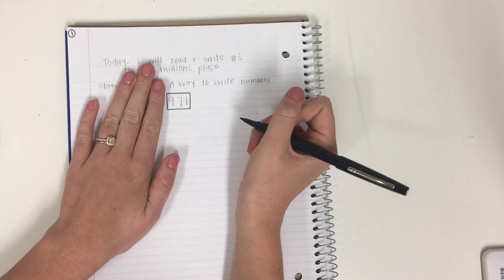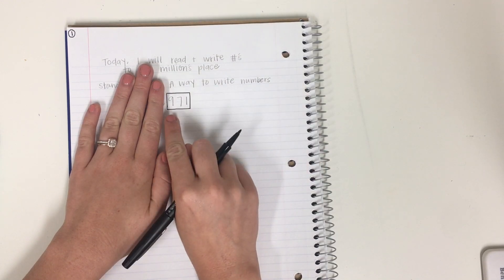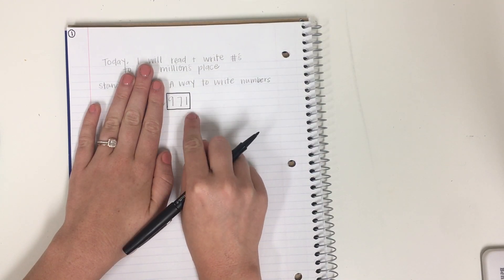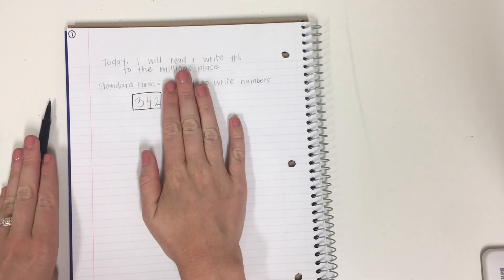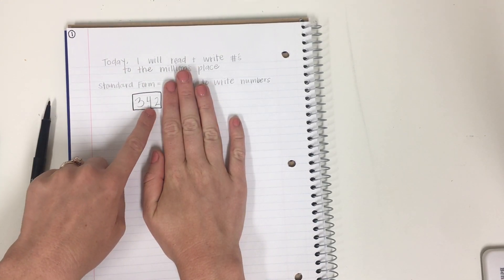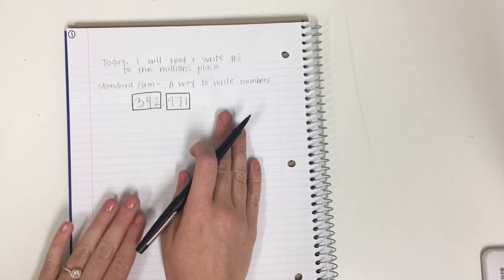So when we look at this number, we know how to say this, right? We know that this number is 971. And when we look at this number, we know that this is 342. So if you're able to say those numbers, you're going to do just fine.